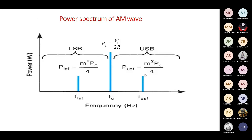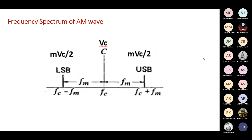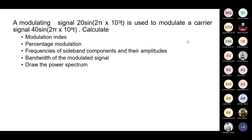This is the power spectrum — we are drawing power versus frequency. Mention the power of the lower and upper sidebands and the carrier power. If a frequency spectrum is asked, you have to mention the frequency, upper side and lower side frequency, and the corresponding amplitudes in the frequency spectrum.